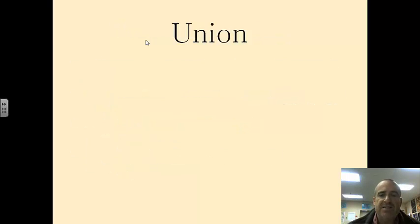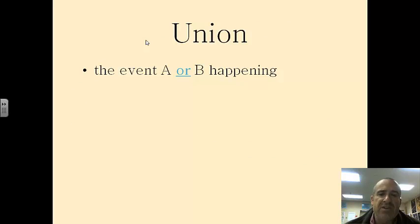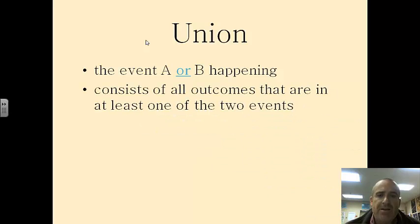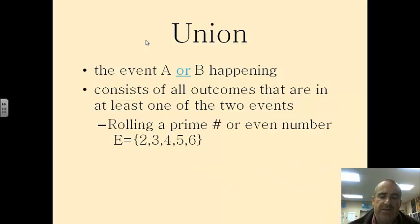That leads us to something called a union. The union is the event A or B happening. It consists of all the outcomes that are in at least one of the two events. And the way we write that, well, I'll get that in a minute.